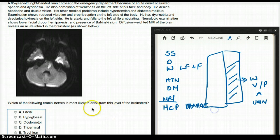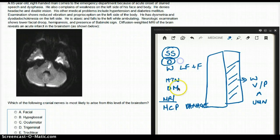Now which of the following cranial nerves most likely arise from this level of the brainstem? We already know that this patient has slurred speech, dysphagia, and facial droop.